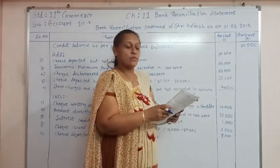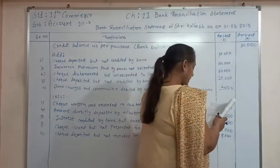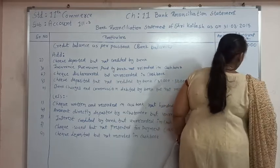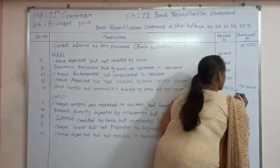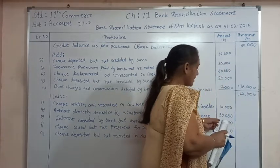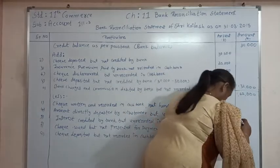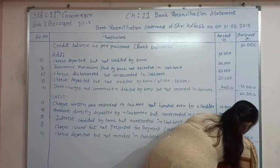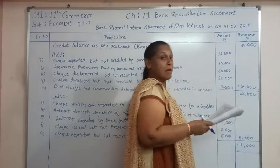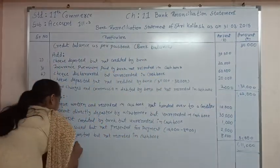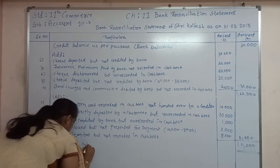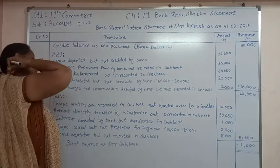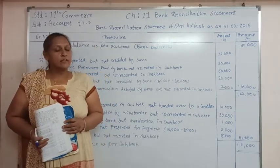Now let's total both sides. The addition side totals: 30,000 plus 20,000 plus 60,000 plus 20,000 plus 2,000 equals 1,32,000, and adding 30,000 gives 1,62,000. The deduction side totals: 10,000 plus 30,000 plus 1,000 plus 2,000 plus 8,000 equals 51,000. Deducting 51,000, the balance will be 1,11,000. This will be the bank balance as per the cashbook. Students, please note this down in your notebook. Thank you for watching this video.